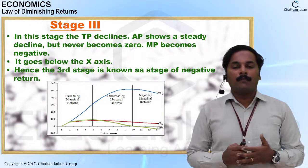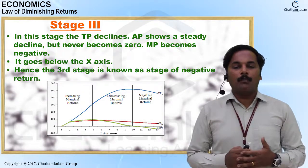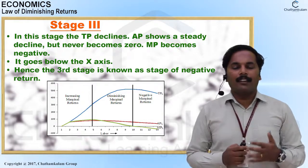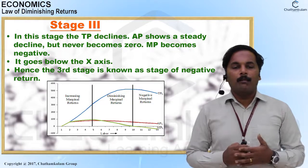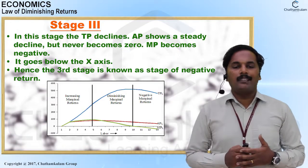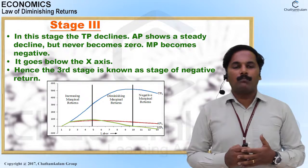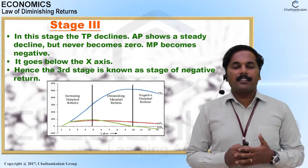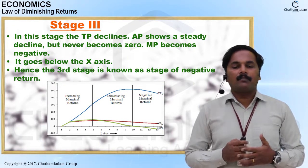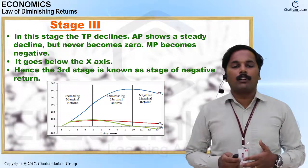In Stage 3, negative marginal returns: TP declines, and AP shows a steady decline but never becomes zero. MP becomes negative, going below the x-axis. Hence, the third stage is known as the stage of negative returns.